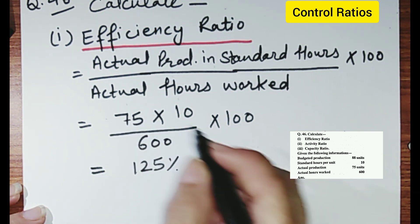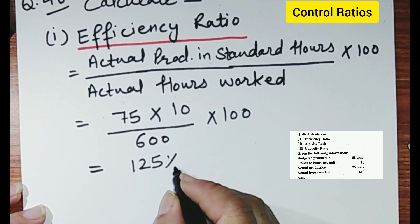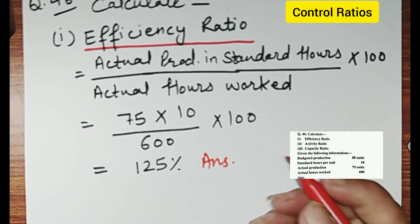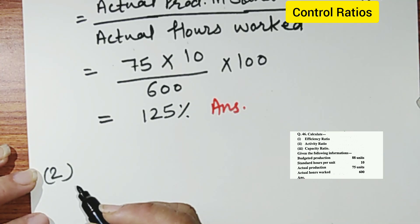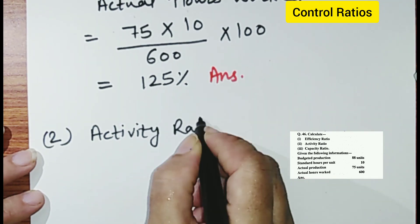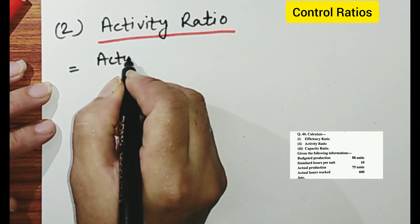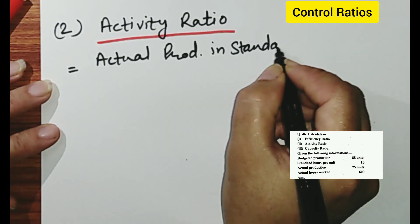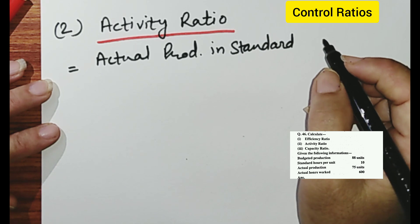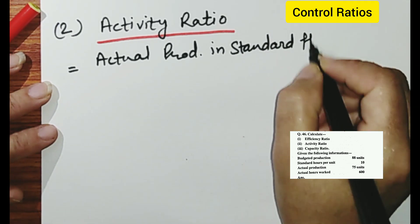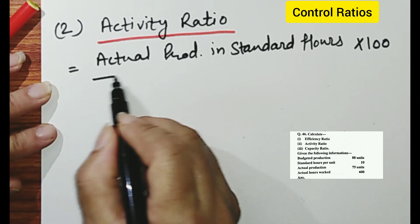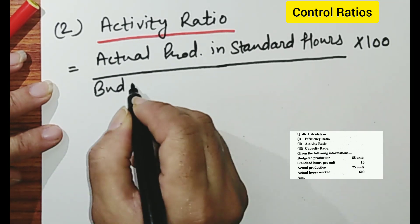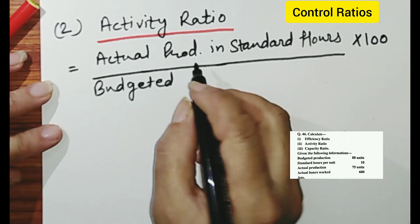Next is the second part, that is the activity ratio. The activity ratio is equal to actual production in standard hours, upon budgeted production in standard hours, multiplied by 100.